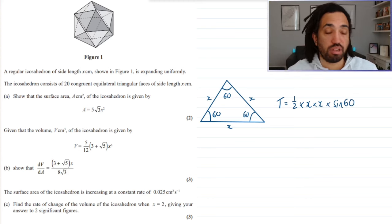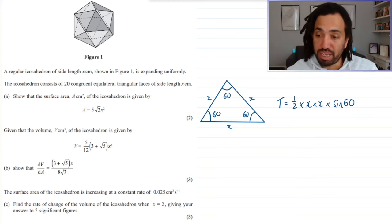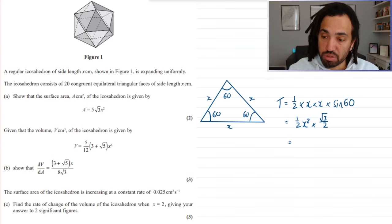So, using our formula for area of triangle, a half a, b, sine c, it's going to give me a half x squared and sine of 60 is root 3 over 2. So, this gives me a total of root 3 over 4 x squared.